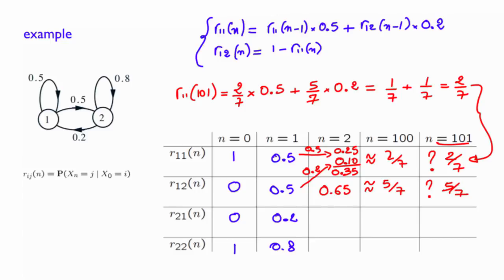This is an interesting fact. When the system starts in state 1, the probability that I found myself in state 1 after a long period of time seems to converge to a constant value, in that case, to the constant value of 2 over 7.